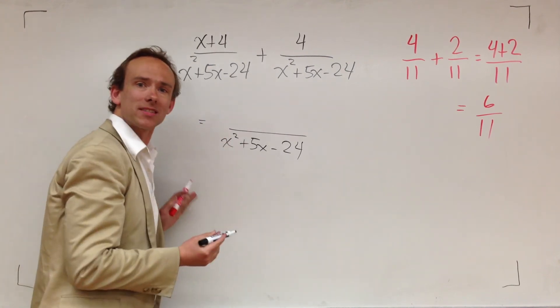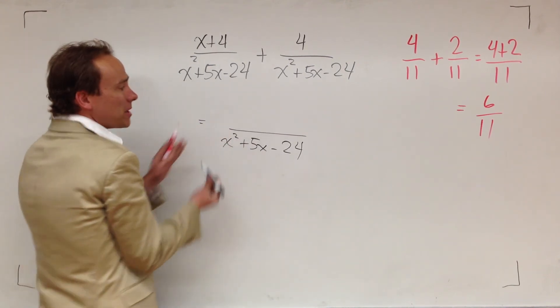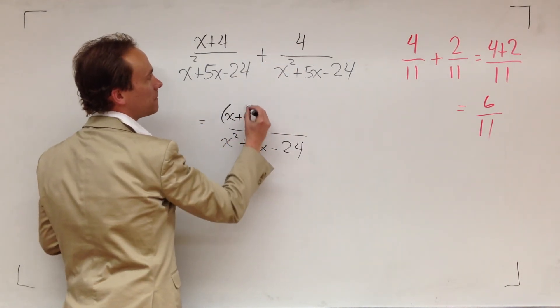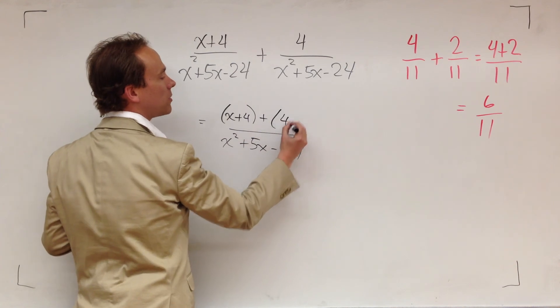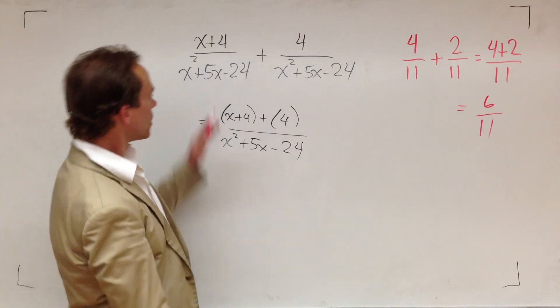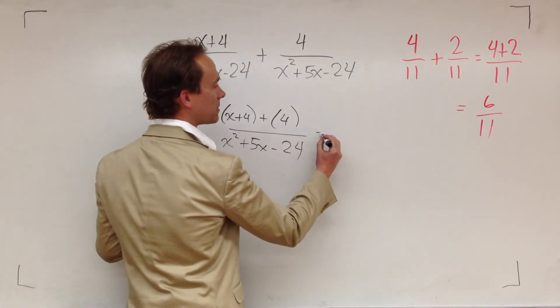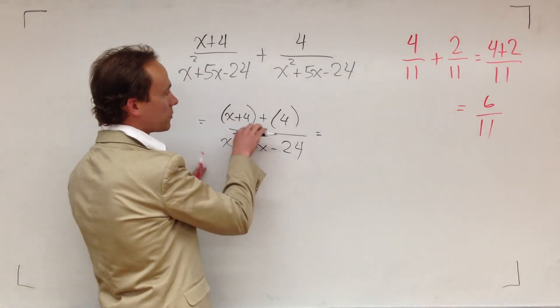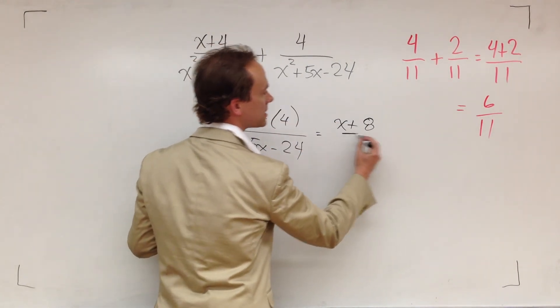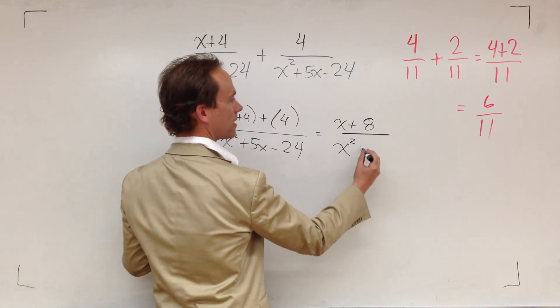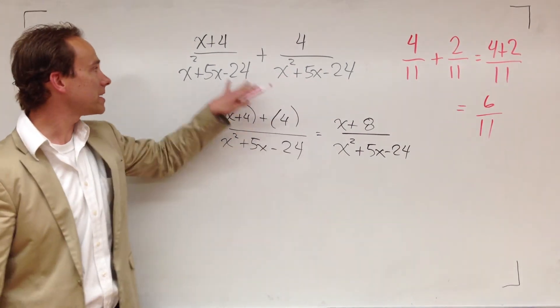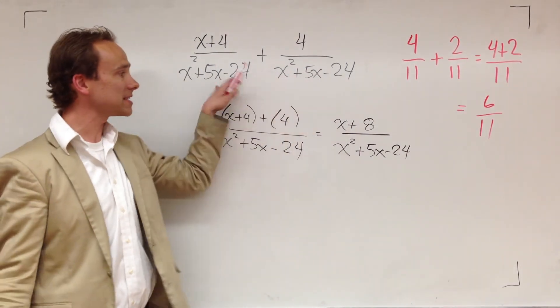Don't do every step at once. Don't do the whole problem in one step. Write this numerator plus that numerator. So here we go. X plus four plus four. And I'm using parentheses because when we do subtraction, parentheses are going to be really helpful. Now I'm going to combine my like terms. Four plus four is eight. So x plus eight over my denominator. The key is that they're common denominators, so they don't change.